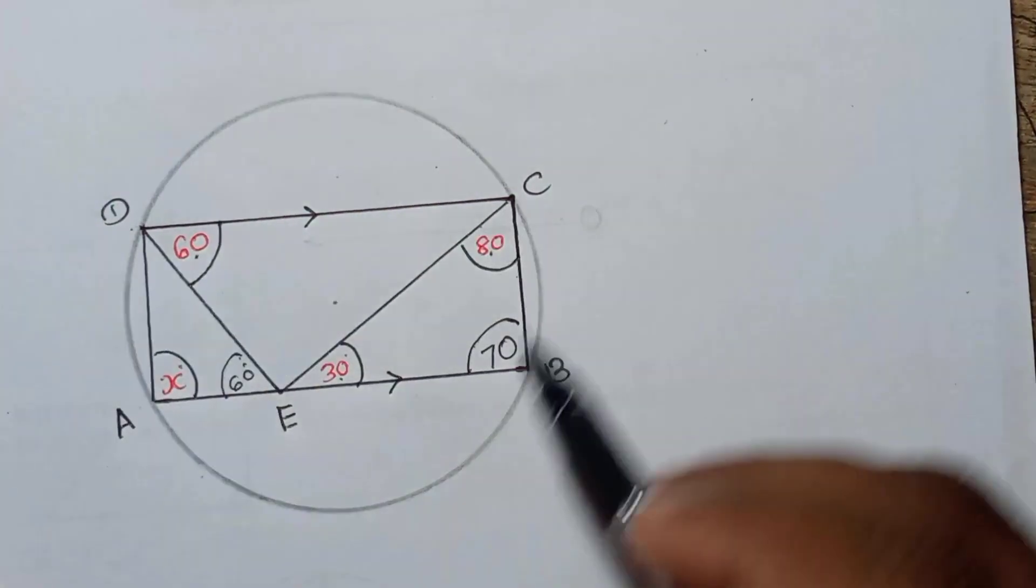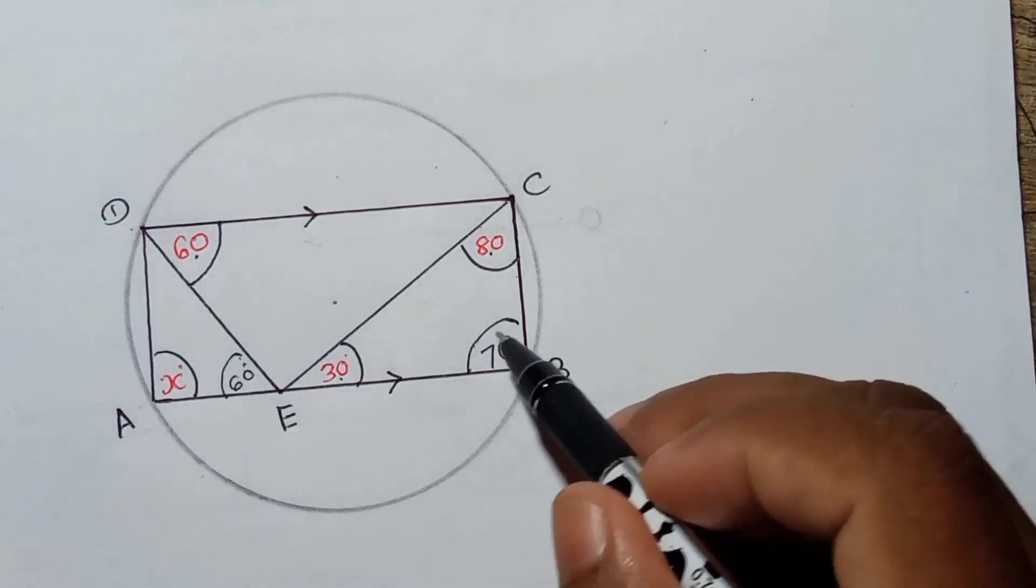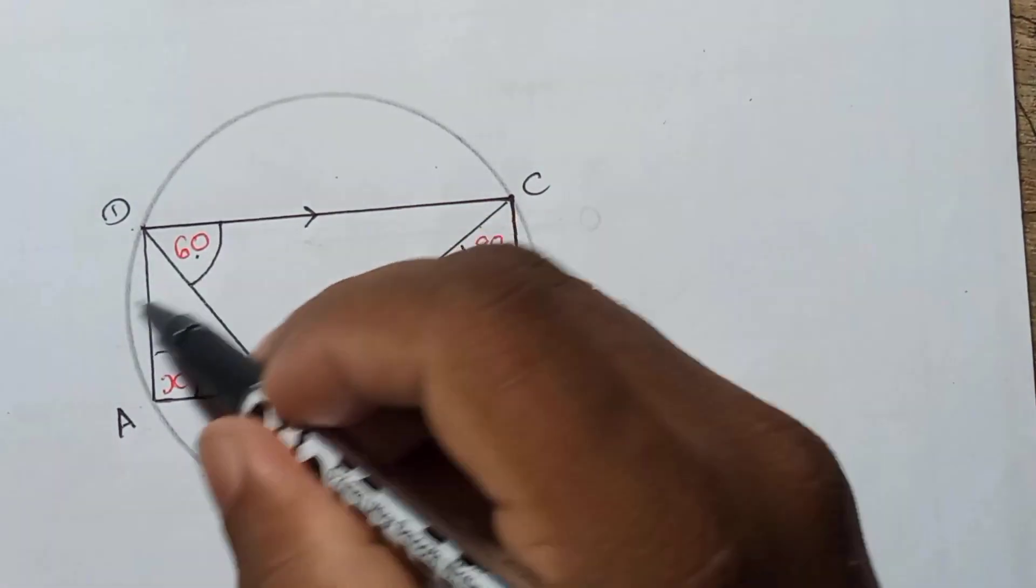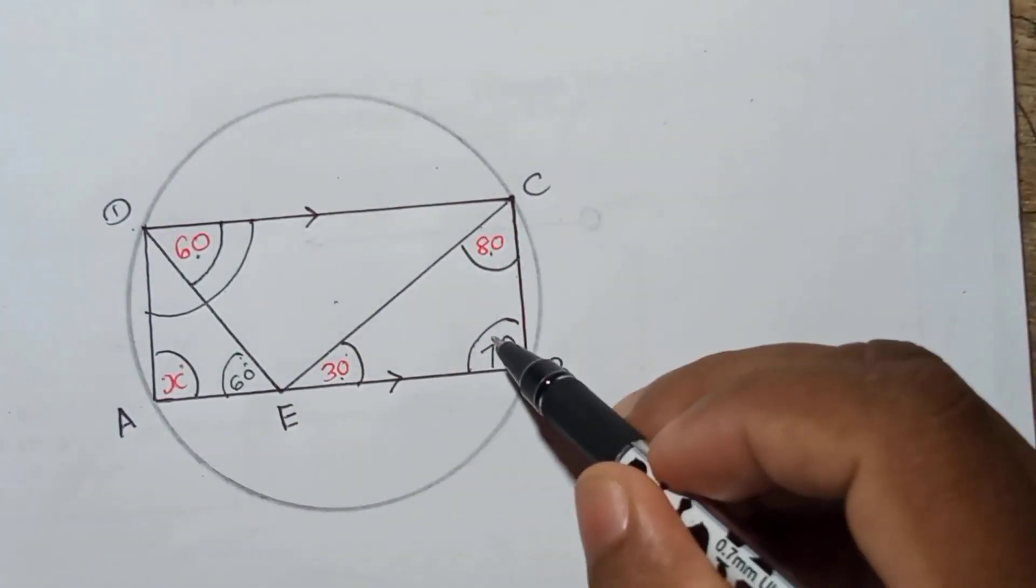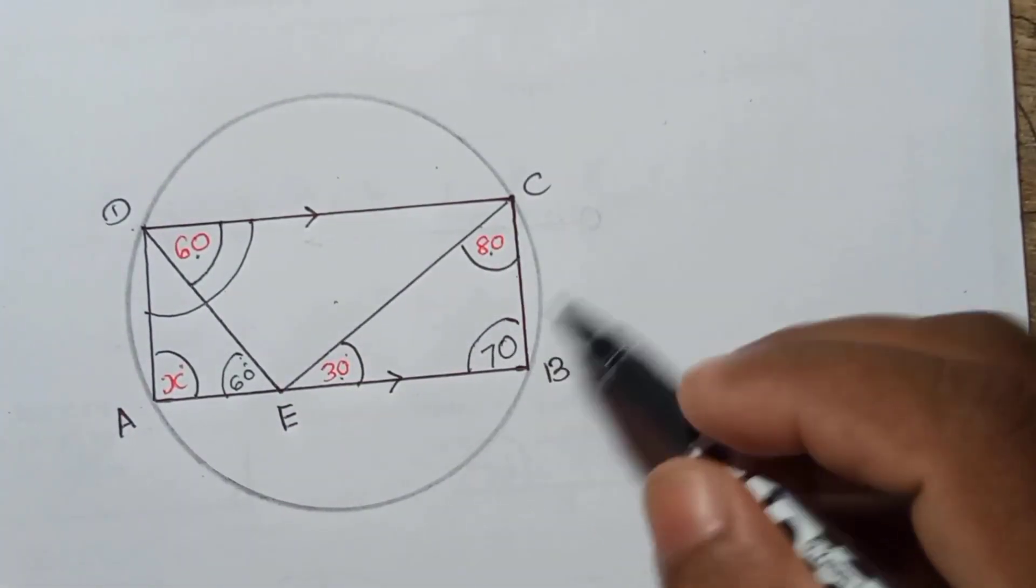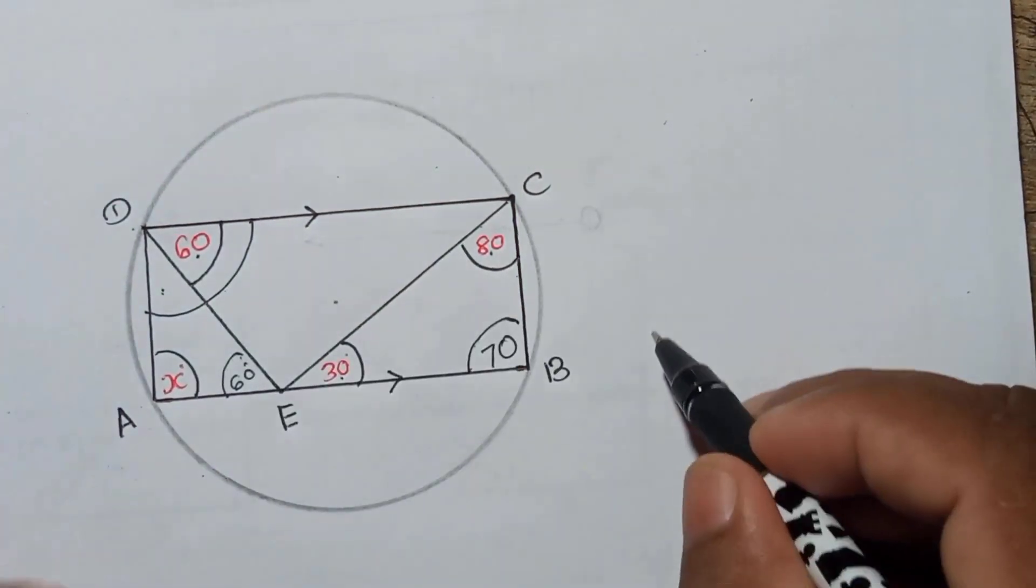And then how to find x? Now we know in a cyclic quadrilateral, opposite angles are supplementary, that means 180. That means this plus this must be 180, right? I mean this angle plus this angle must be 180.